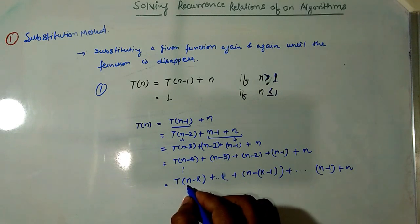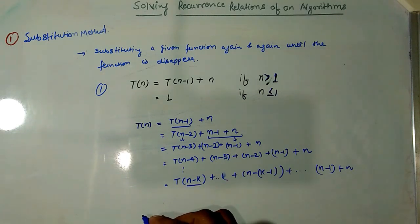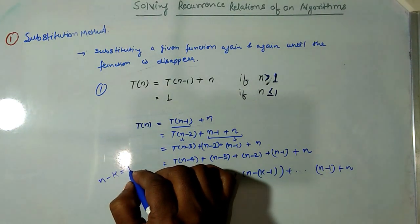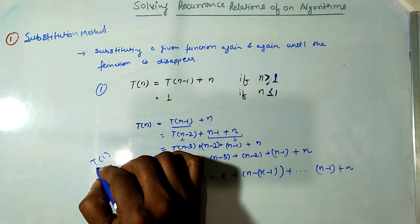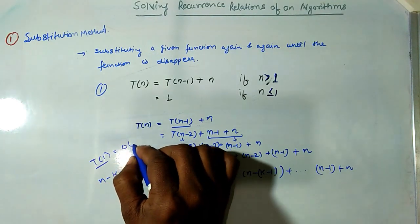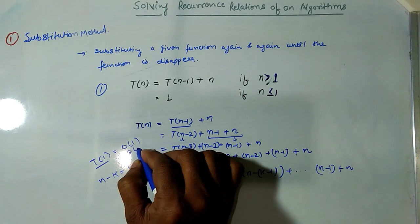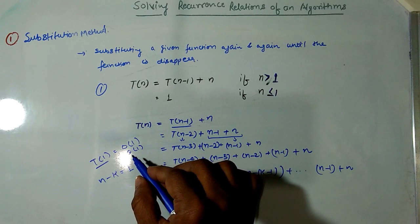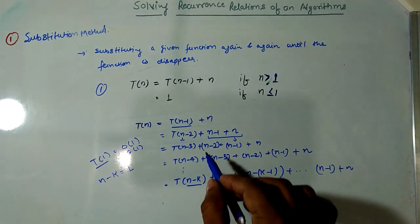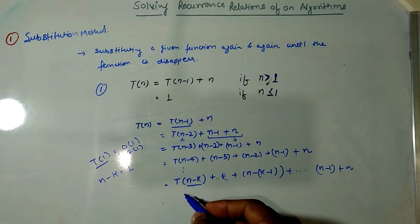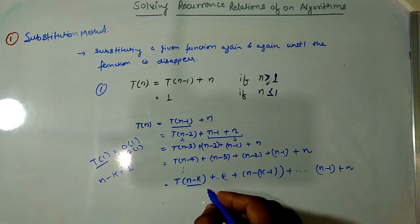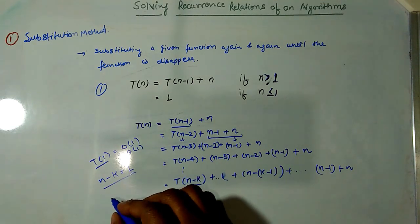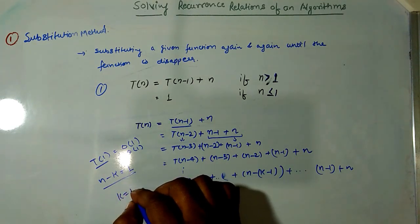This step is converted into the base case when n-k = 1, because we know T(1) = 1, which is O(1) or Theta(1). So we assume n-k = 1, which means k = n-1.